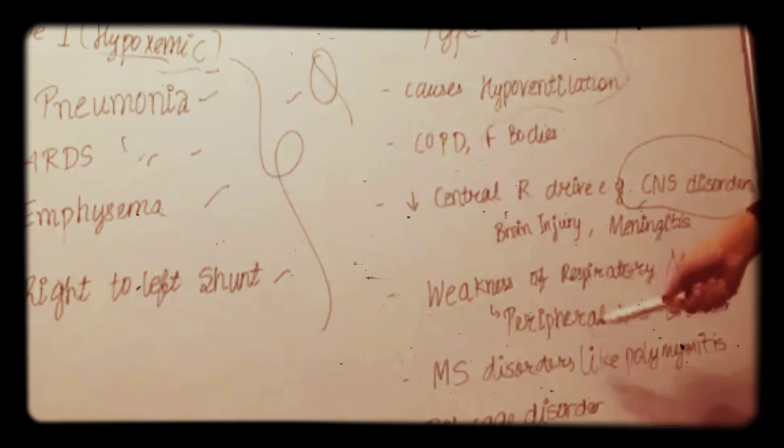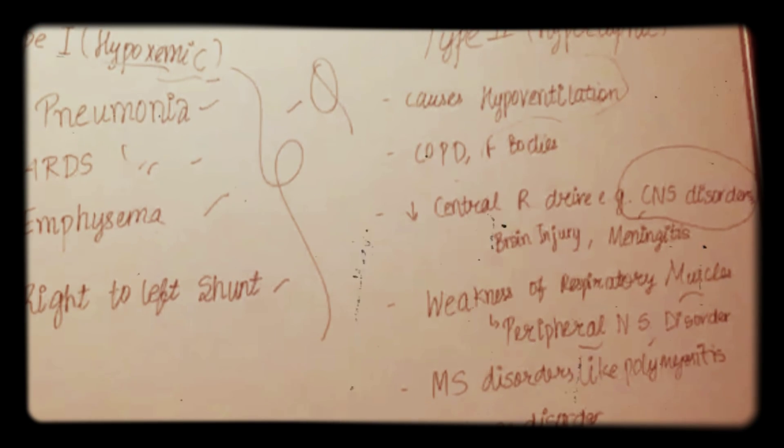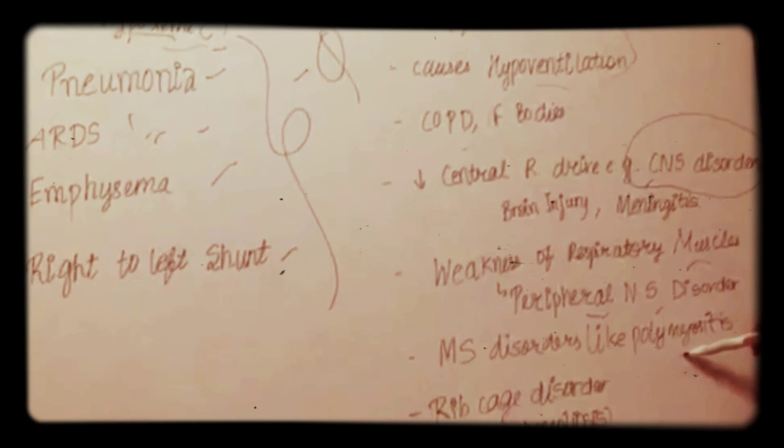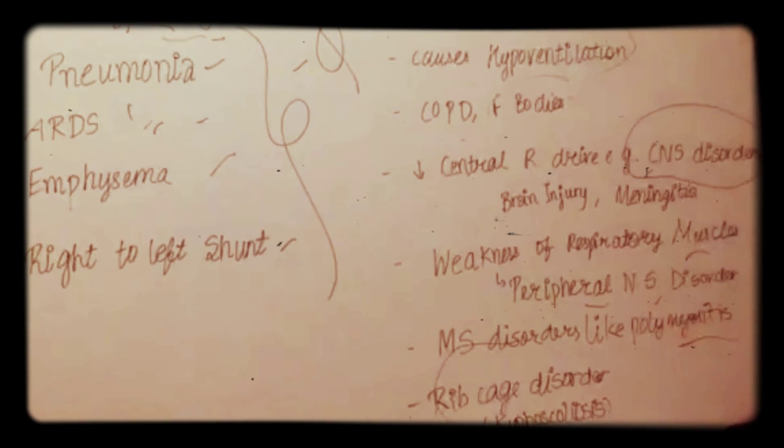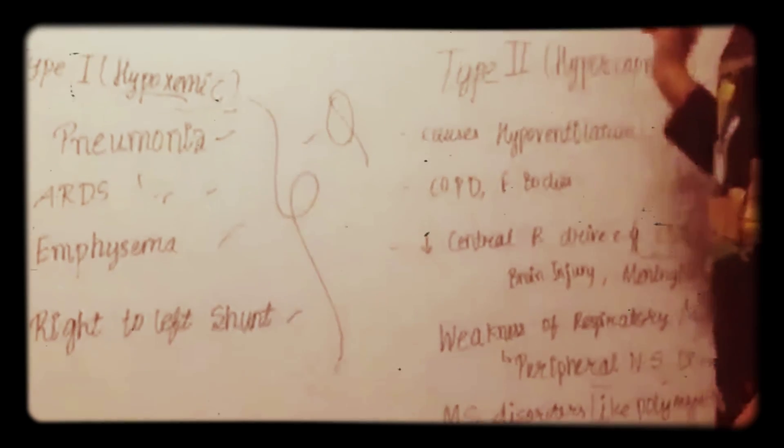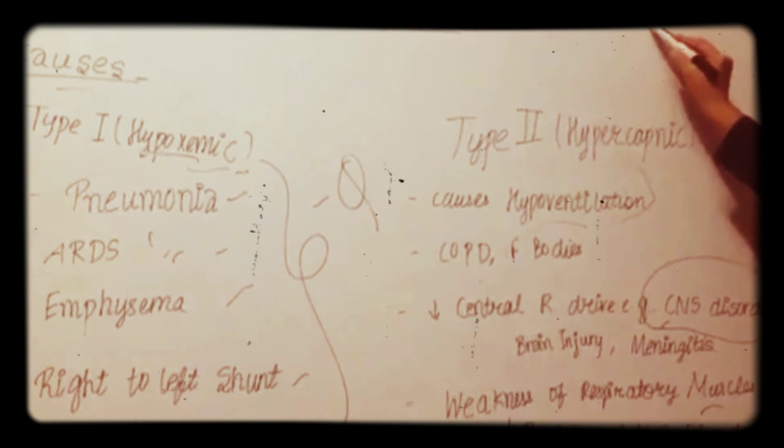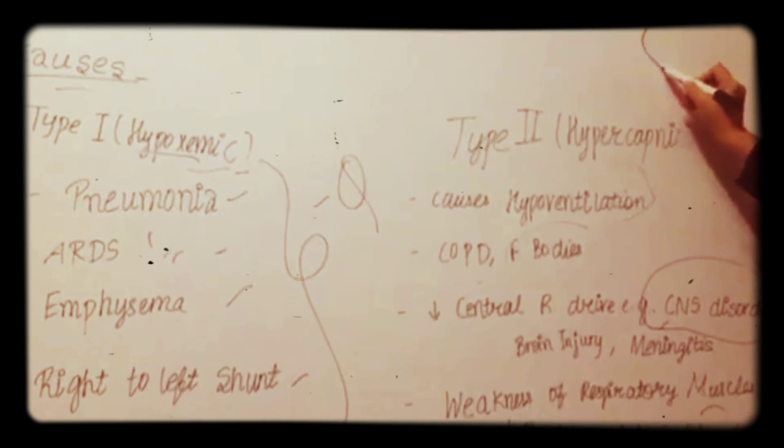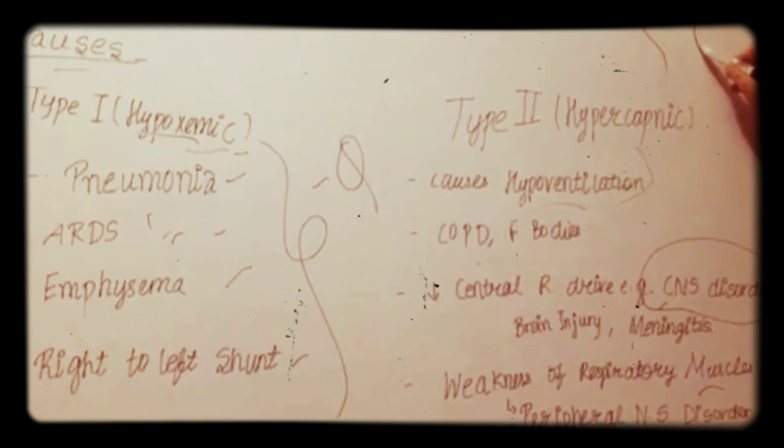It can occur due to weakness of respiratory muscles like in peripheral nervous system disorders, MS disorders like polymyositis and ribcage disorders like kyphoscoliosis. In kyphoscoliosis, there is deformity in spine. In kyphosis, the spine will be like this and in scoliosis, spine is like this.